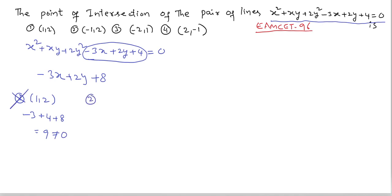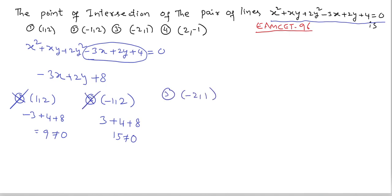Second option (-1, 2): -3×(-1) + 2×2 + 8 = 3 + 4 + 8 = 15, not equal to zero. Second option is wrong. Third option (-2, 1): 6 + 2 + 8 = 16, which is also not equal to zero. Third option is also wrong.